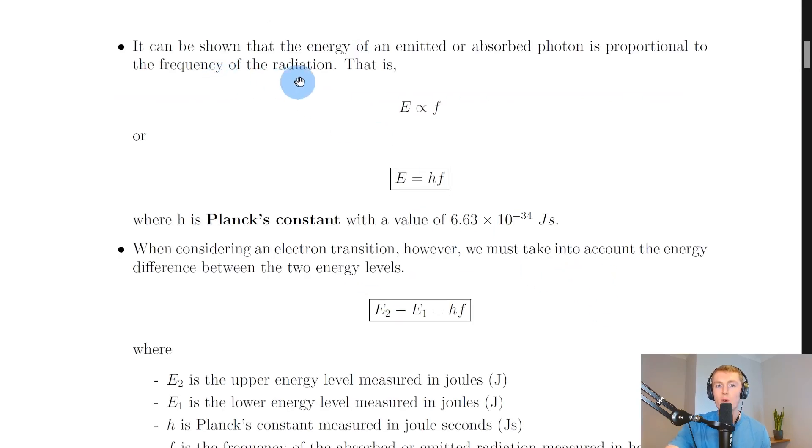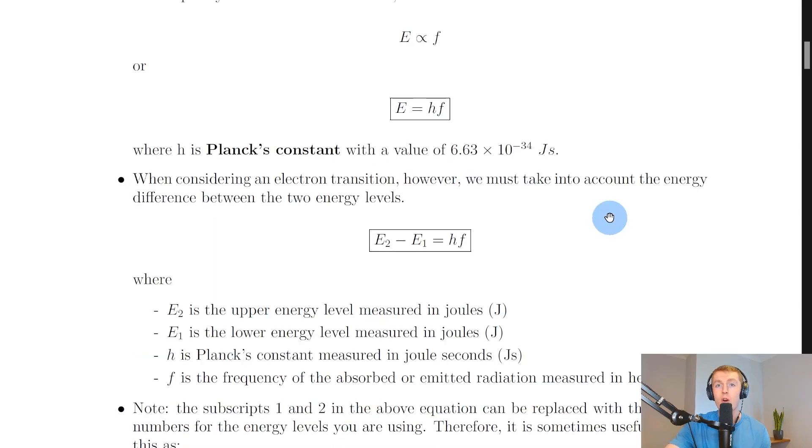It can be shown that the energy of an emitted or absorbed photon is proportional to the frequency of the radiation. We can say that energy E is directly proportional to the frequency f, or an equation that you'll get on the relationship sheet in the exam is E equals hf where h is Planck's constant with a value of 6.63 times 10 to the minus 34 joule seconds.